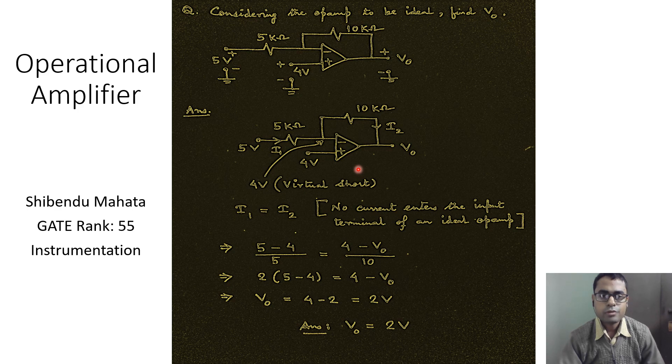First of all, from the concept of virtual short, the voltage at the non-inverting input terminal should be the same as the voltage at the inverting input terminal. So if this voltage is equal to 4 volts, therefore the voltage at this node should also be equal to 4 volts. This is the first target that we have reached.